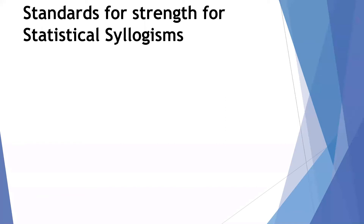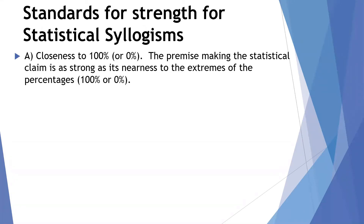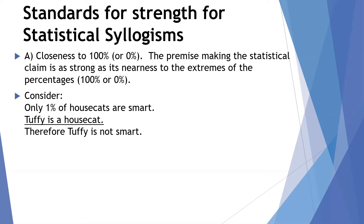Let's consider the standards of strength for statistical syllogisms. There are two that we should consider. The first is closeness to 100% or 0%: the premise making the statistical claim is as strong as its nearness to the extremes of percentages — either 100% or 0%. For example: only 1% of house cats are smart; Tuffy is a house cat; therefore, Tuffy is not smart. Since 1% is very close to 0%, this is a strong argument.